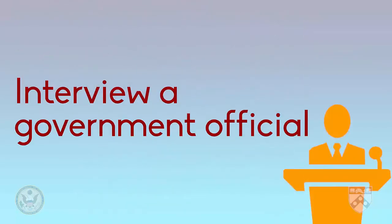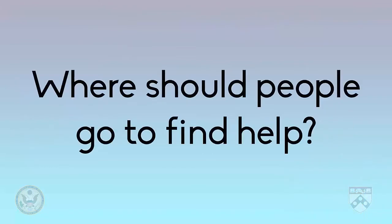Let's get back to our news story about the tornado. Another source a journalist could interview is a government official. A journalist might ask, 'Where should people go to find help?' Here, 'where' is our question word, 'should' is our helping verb, 'people' is our subject, and 'go' is our main verb. The modal verb 'should' tells us about the purpose of the question — it asks for advice on what people should do next.